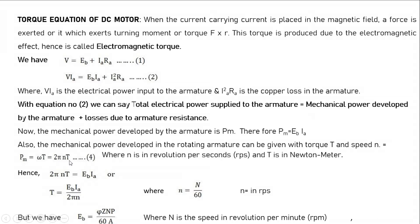PM = ω·T, where ω = 2πn·T. These two formulas for mechanical power can be related — one is in terms of speed (n in RPS) and torque, and the other is in terms of back EMF and current. Since both are equal: 2πn·T = Eb·Ia, giving T = Eb·Ia / 2πn, where n (RPS) = N/60 with N in RPM.